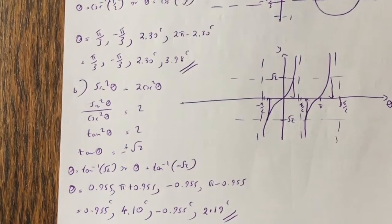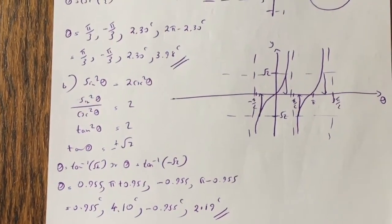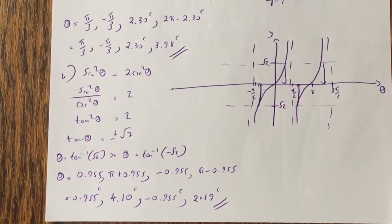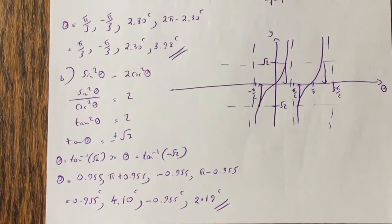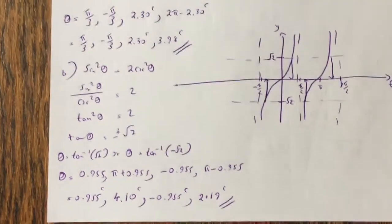And then the answers are here. 0.955, pi plus 0.955, minus 0.955, pi minus 0.955, and these are the answers: 0.955, 4.10, minus 0.955, 2.19 radians. Okay, so that's question 3, and the question 4 is the differentiation question.